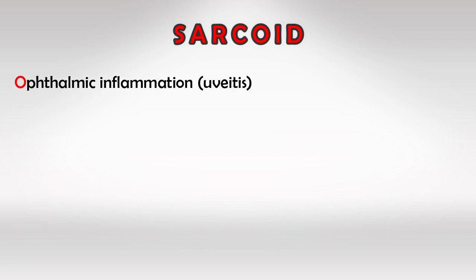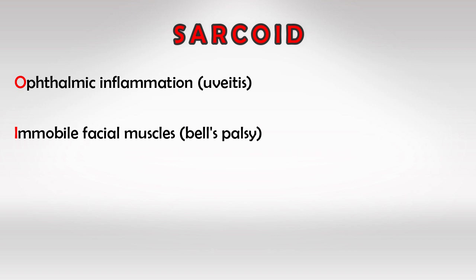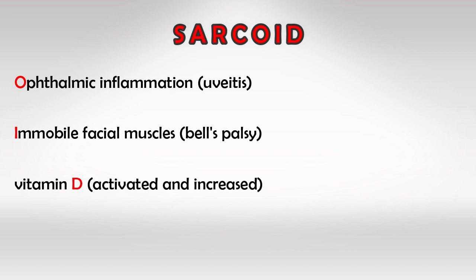O is for ocular inflammation, which is uveitis — a very common feature in sarcoidosis. I is for immobile facial muscles, which refers to Bell's palsy. And D is for vitamin D.